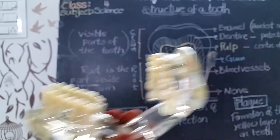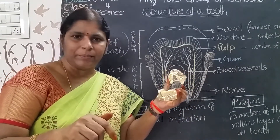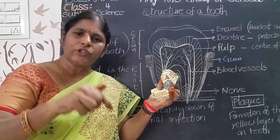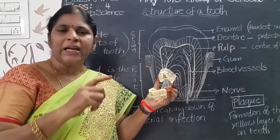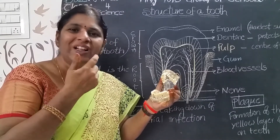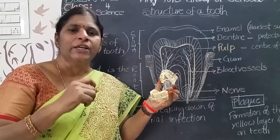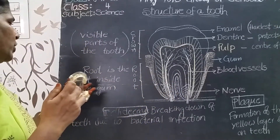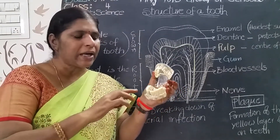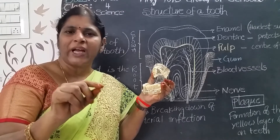Root is the part that grows inside the gum. Just like parts of a plant — roots grow under the soil — the root of a tooth is present inside the gum. Gum means 'chiguru'. All teeth grow out of the gums. Some teeth have one root and some have two. Every tooth has roots, but we cannot see the root part.